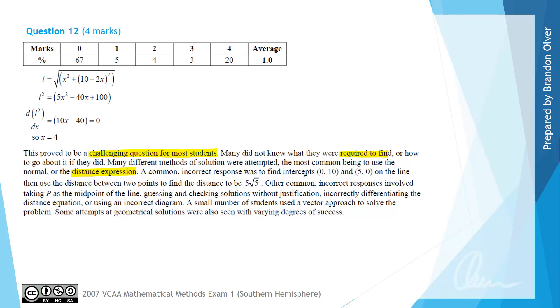A common incorrect response was to find the axial intercepts of 0, 10 and 5, 0 on the line, and then use the distance between two points to find 5 root 5. So that gave the distance between the axial intercepts, not the minimum distance between the origin and the point P.